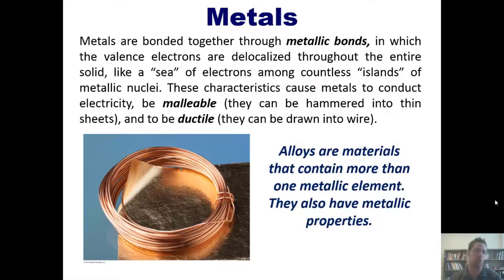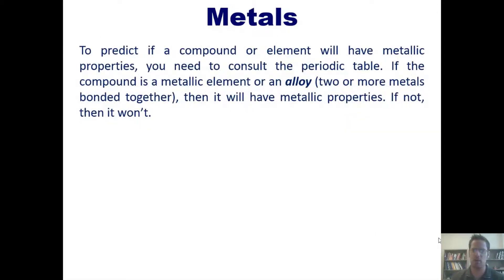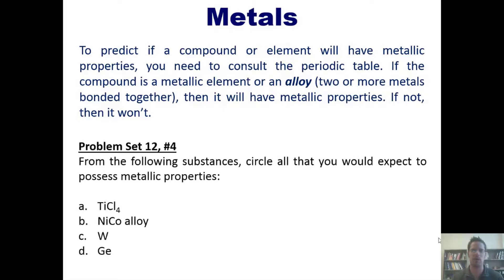Alloys, just so you know, are materials that contain more than one metallic element. They also have metallic properties. So to predict if a compound or element will have metallic properties, you need to consult the periodic table. If the compound is a metallic element or an alloy, which is two or more metals bonded together, then it will have metallic properties. If not, then it won't. That brings us to a wonderful question.